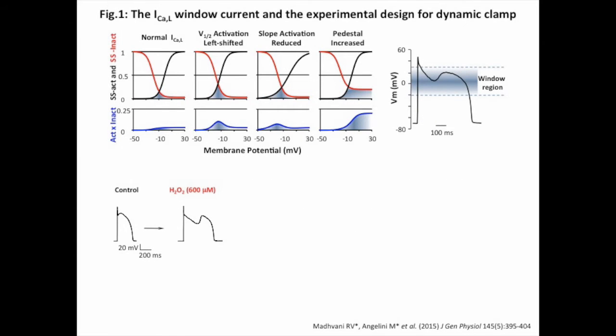To test the sensitivity of EADs to a large number of biophysical parameters, we need a systematic and efficient method such as the dynamic clamp approach, which allows the real-time introduction of a tunable current to the cell. Mimicking oxidative stress conditions by perfusion of hydrogen peroxide induces consistent EADs in current-clamped rabbit ventricular myocytes. We then block the native calcium channels with nifedipine.